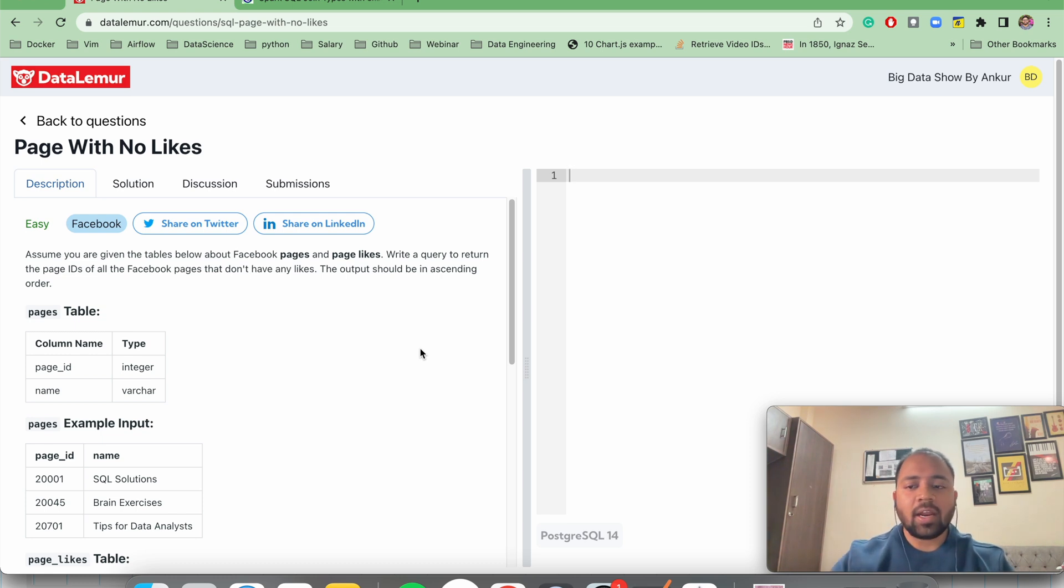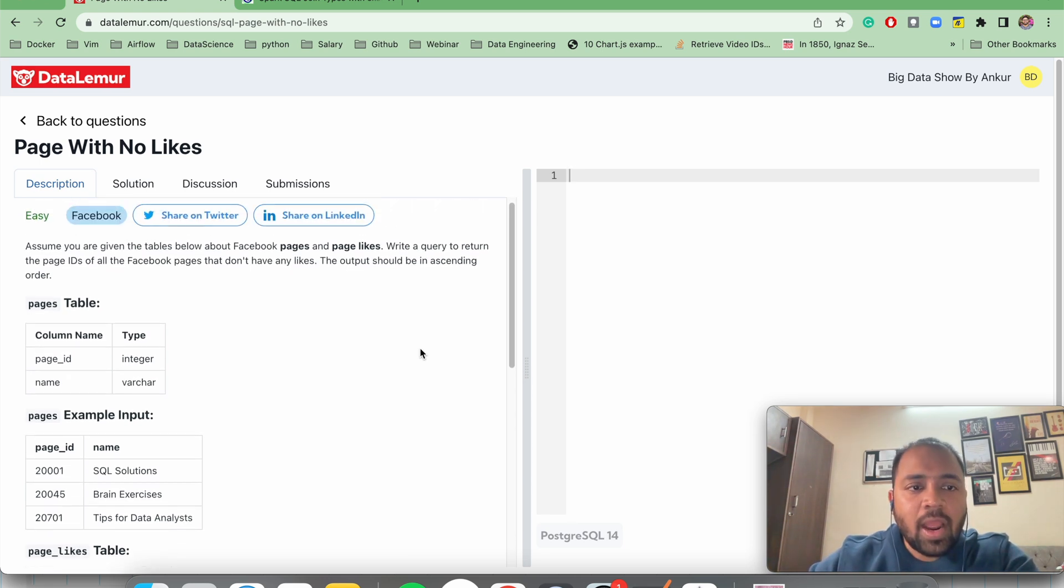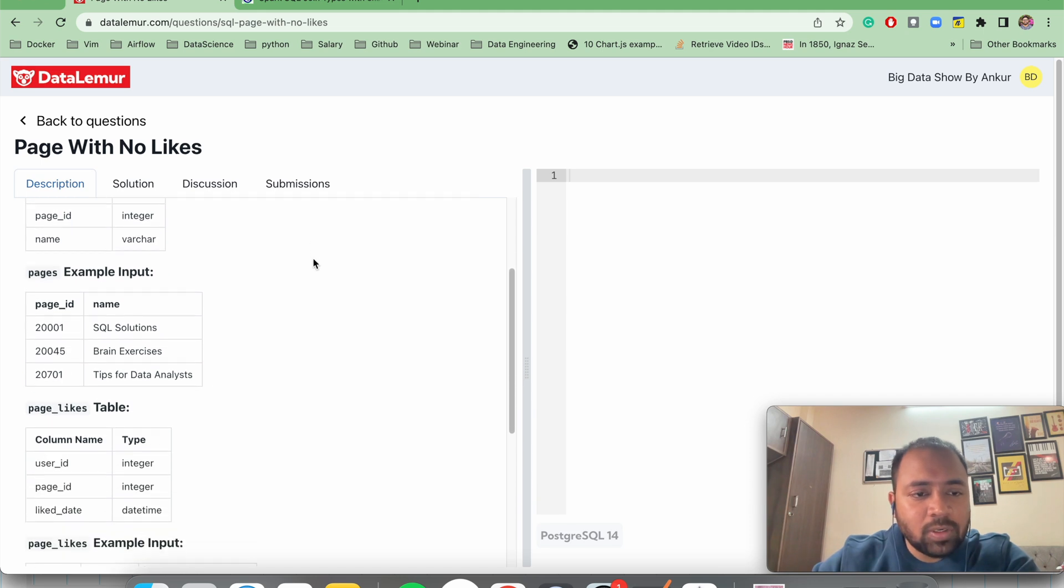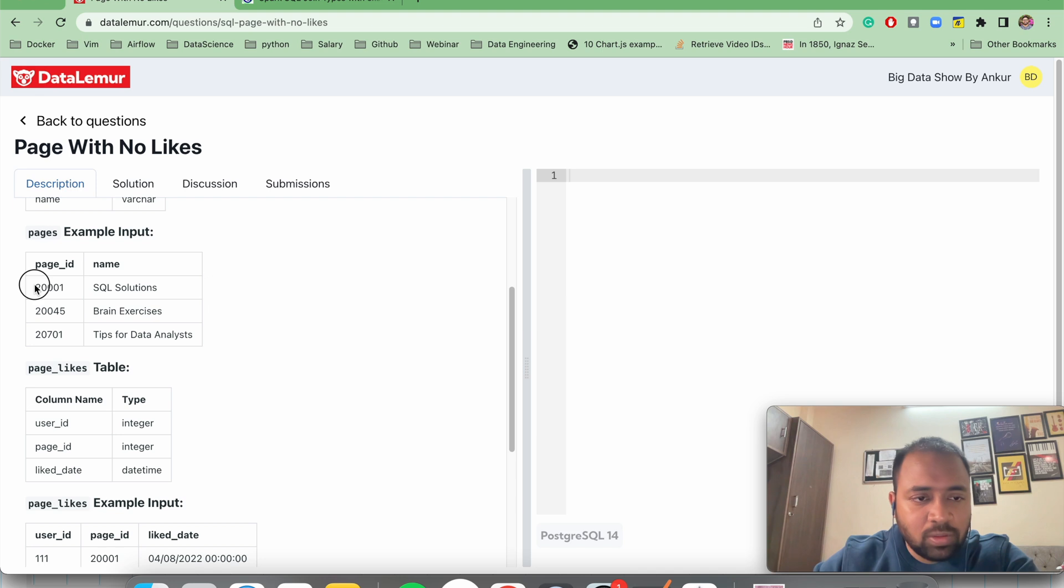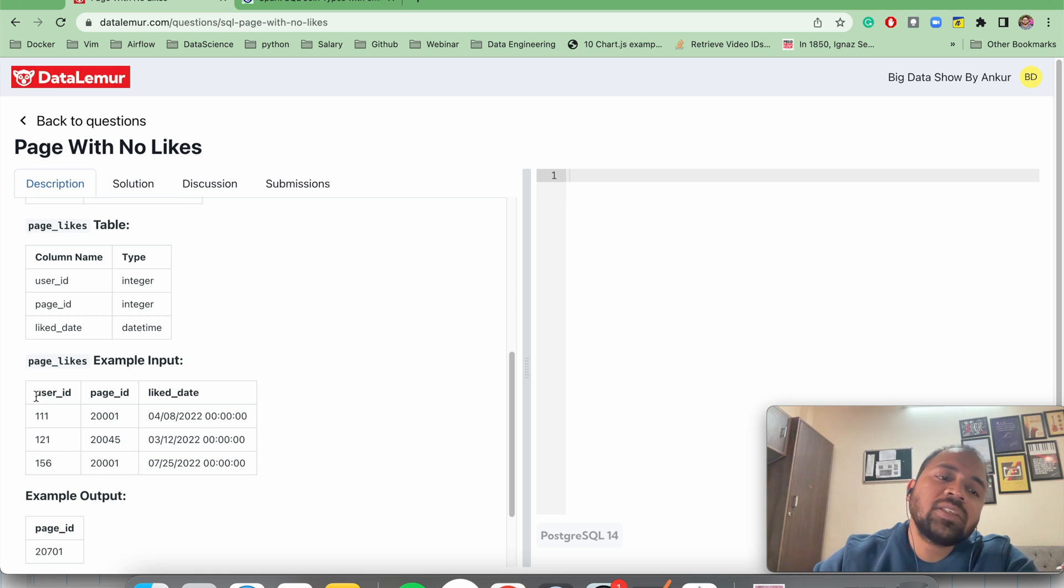In this particular question, there are two tables given. One table is pages, another is page_likes. The question is, assume that you are given the tables pages and page_likes, and we have to write a query to return the page ID of all the pages that don't have any likes. The output should be in ascending order. So we have one table pages with page_id and name, and we have page_likes which has user_id, page_id, and like_date. I've already drawn this table, so let me go there.